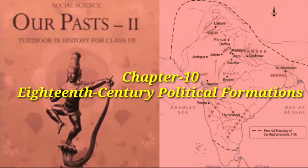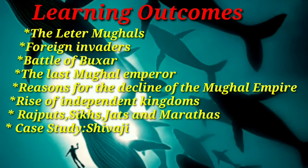Hello students, welcome back to another chapter of history — chapter 10, 18th century political formation. In this chapter, we will learn about the successors of Aurangzeb and how they were responsible for the downfall of the great Mughal empire, develop an insight into the emergence and spread of regional powers, and understand the rise of the Maratha power under Shivaji and his successors.